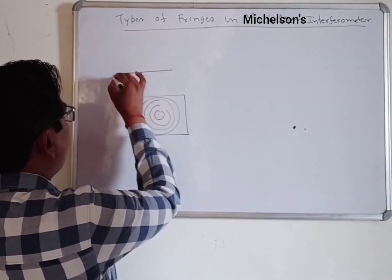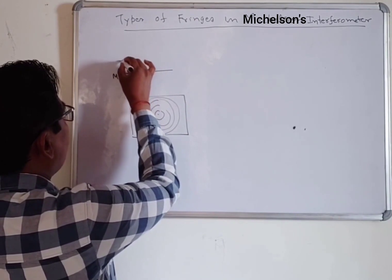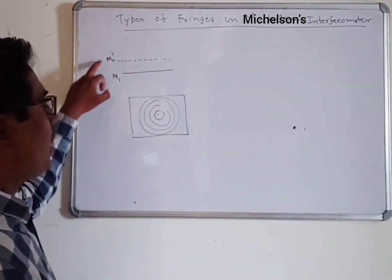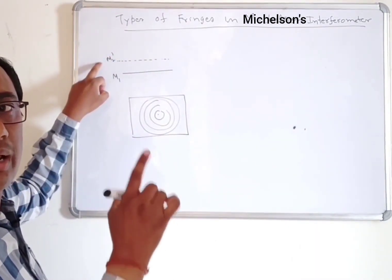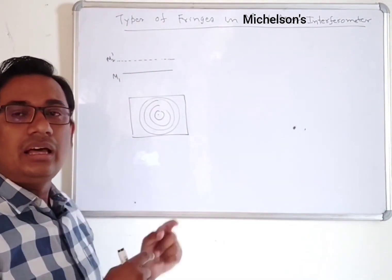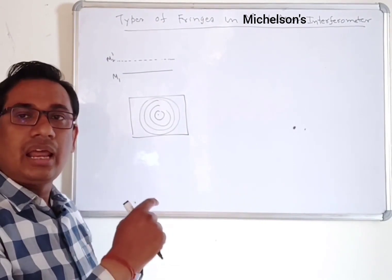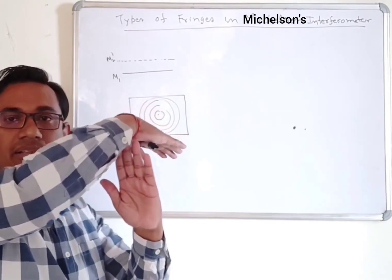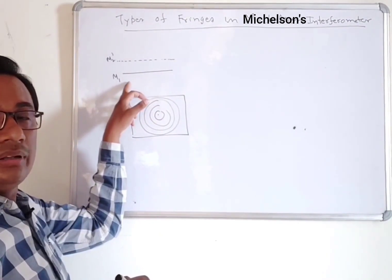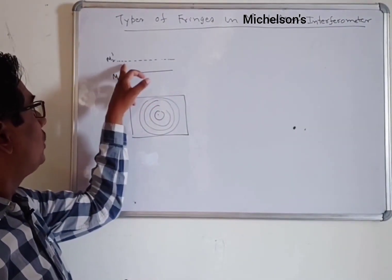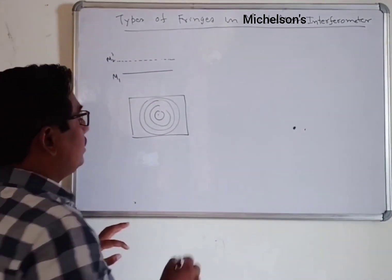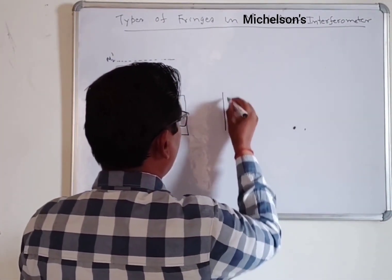In this case, mirror M1 and the virtual image of mirror M2 (M2 dash) will be parallel to each other. Equivalently, the real mirror M1 and real mirror M2 should be perpendicular to each other, so that real M1 is parallel to the virtual image M2 dash.